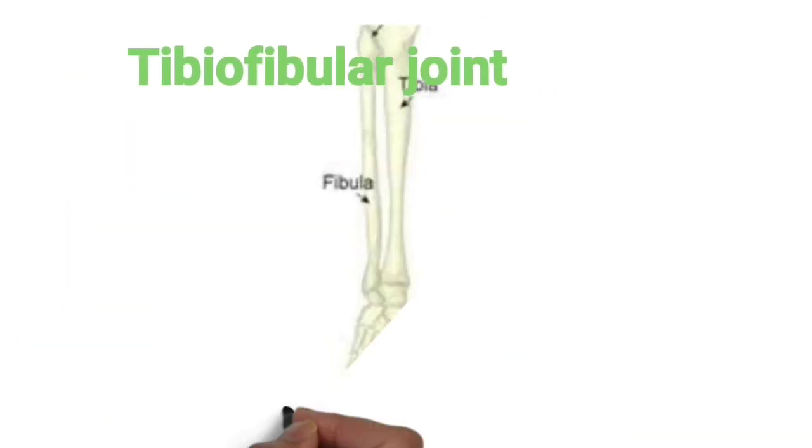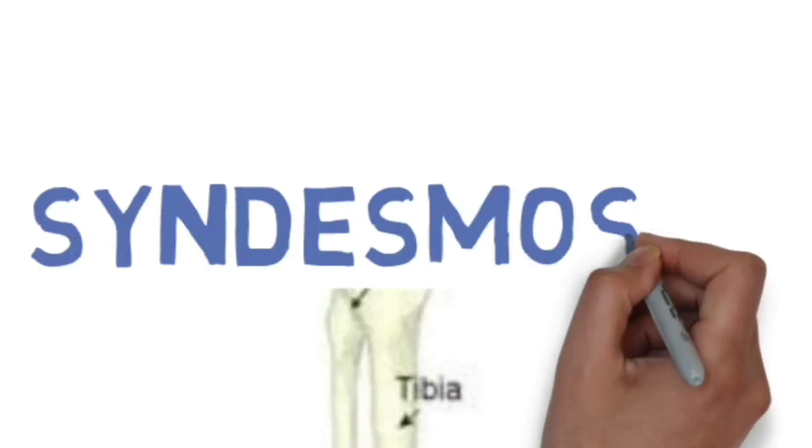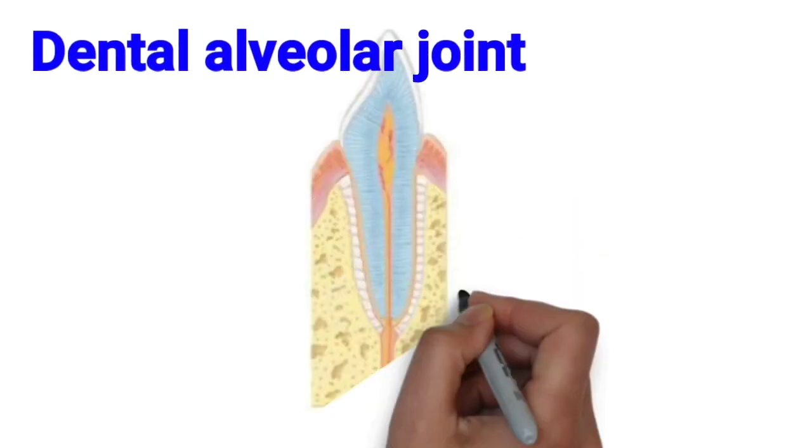The tibia and fibula are connected by the interosseous membrane. The tibiofibular joint is another example of syndesmosis. The dental alveolar joint, where the tooth articulates, is an example of gomphosis.